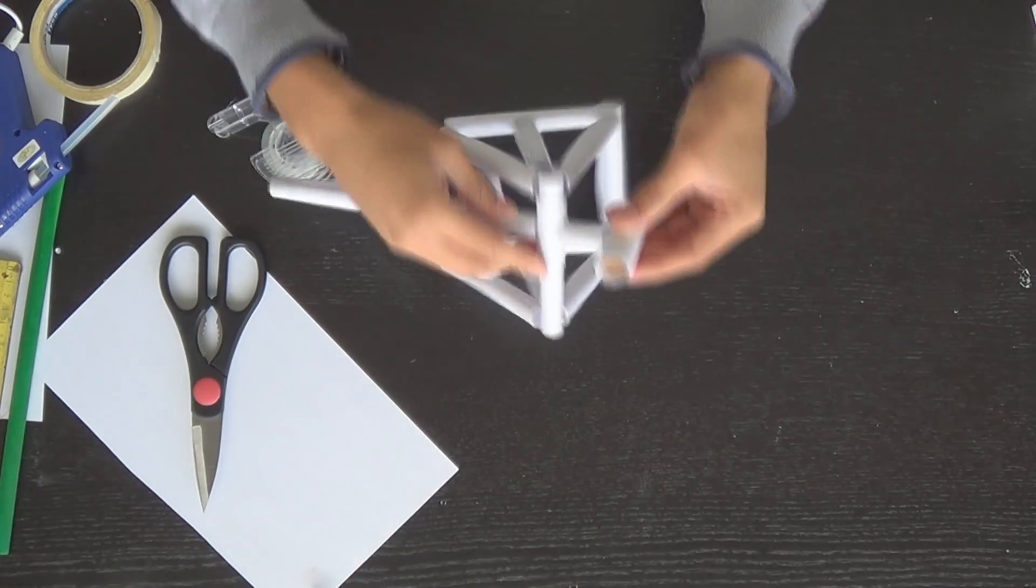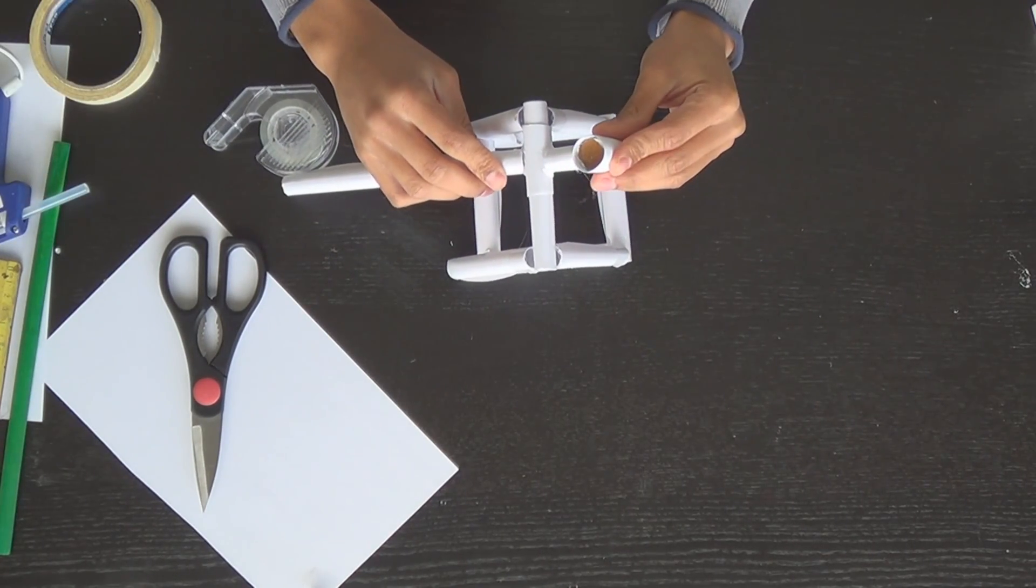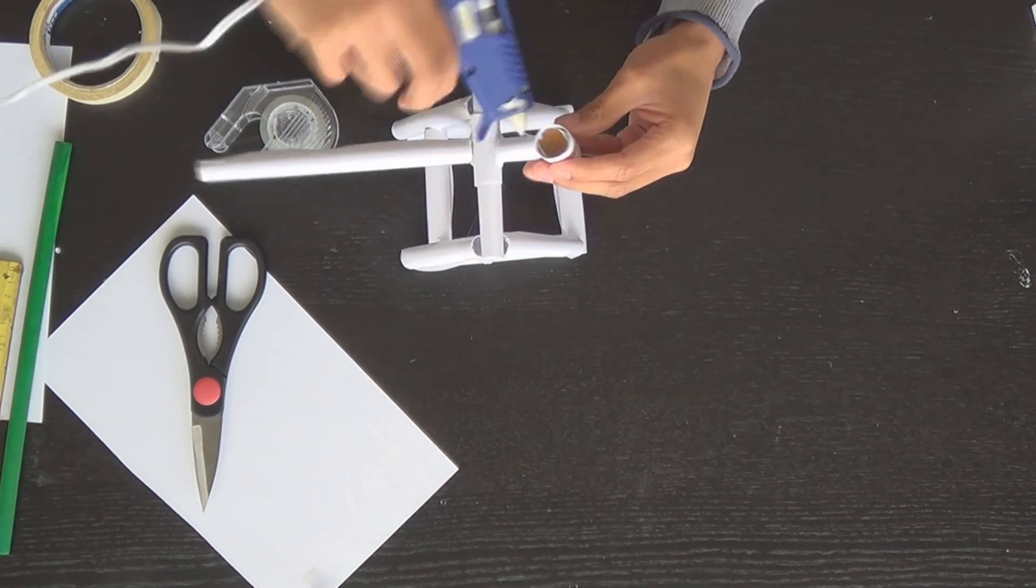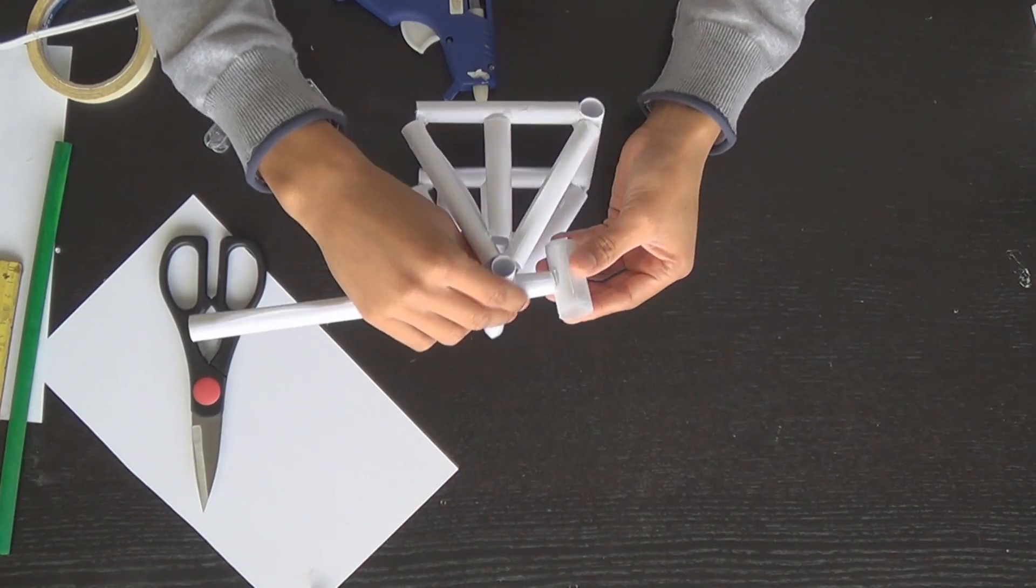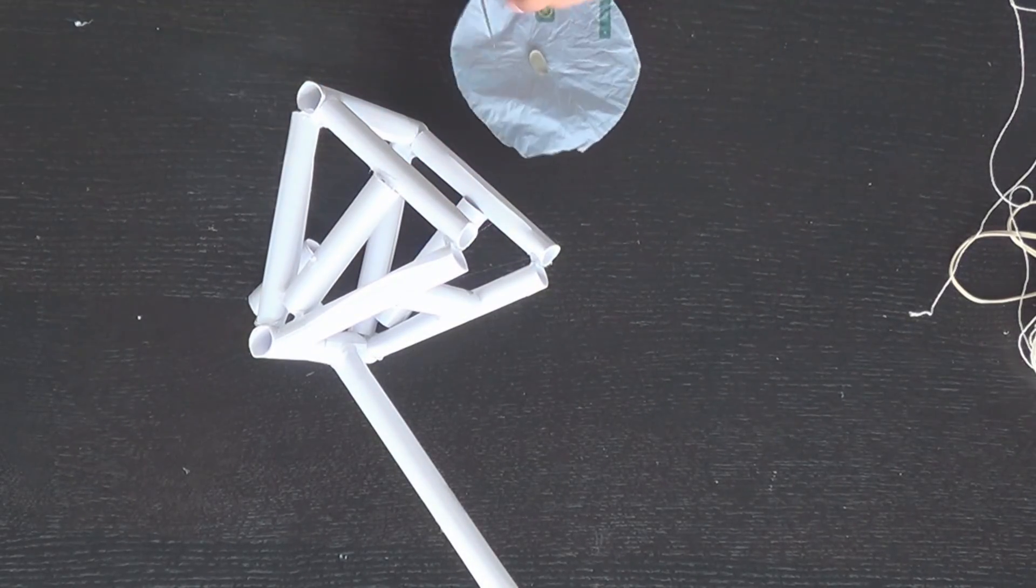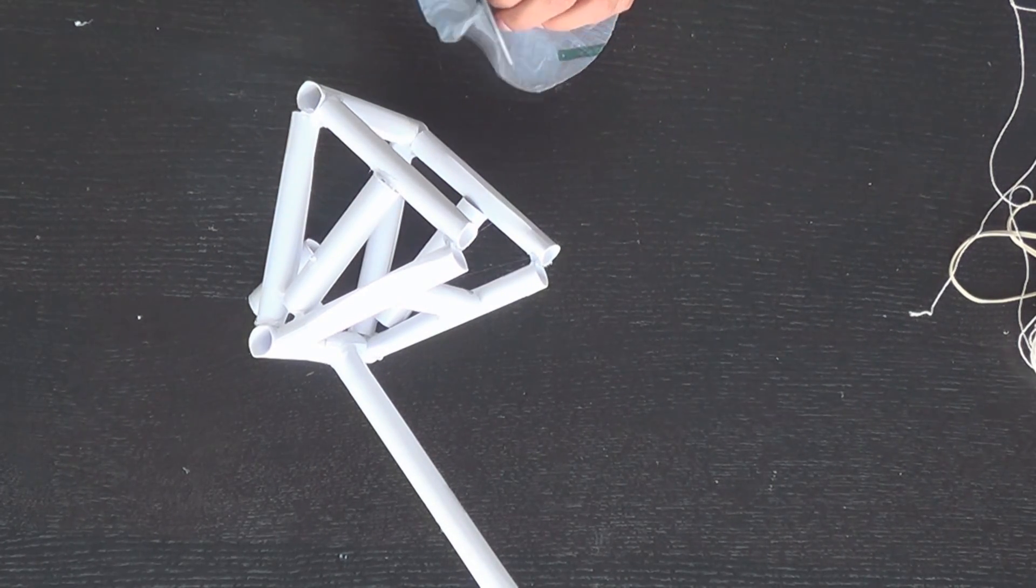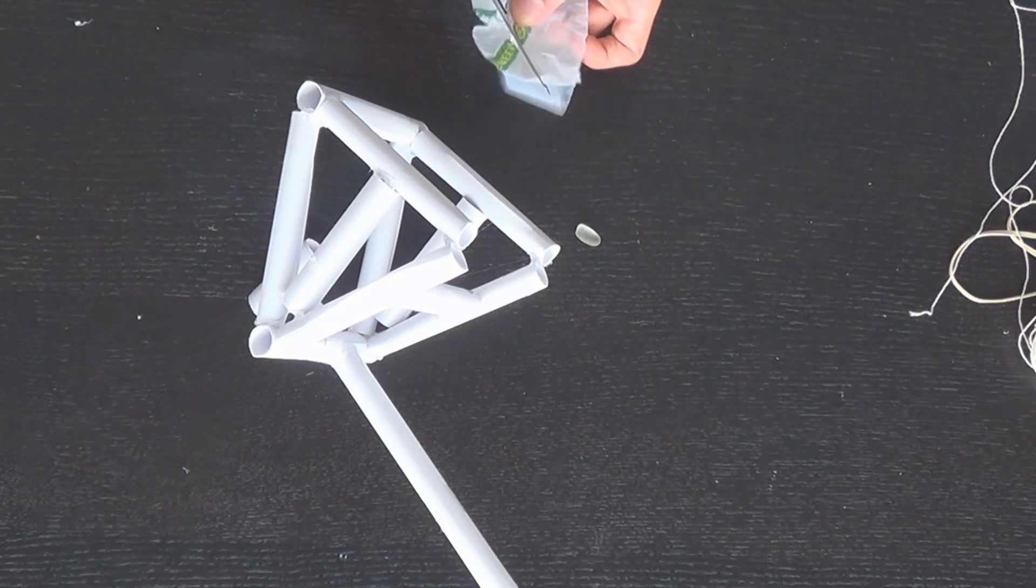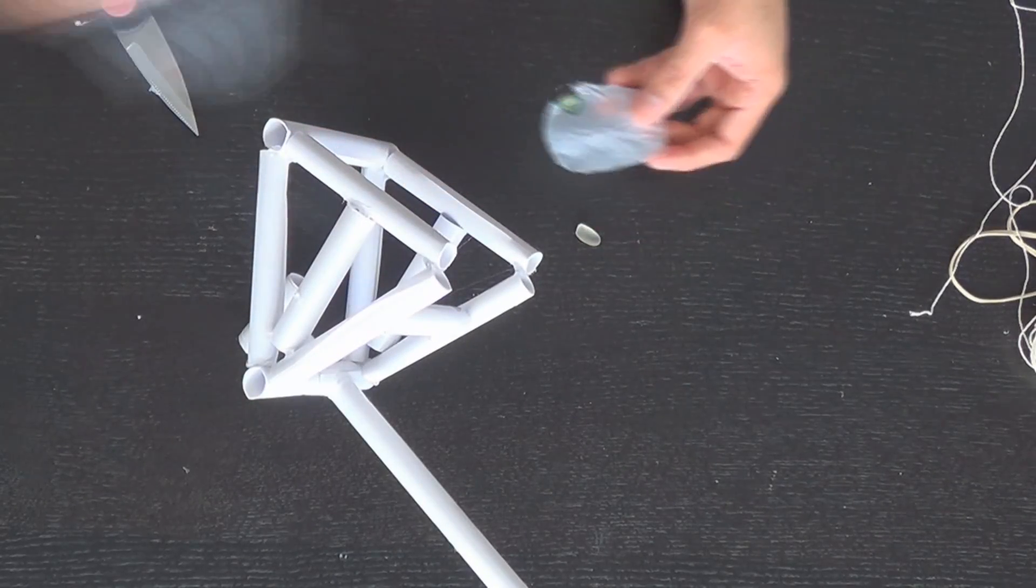Now we can mount our counterweight on the other end of the catapult. And now we're going to use a plastic bag, this is where our payload is going to be carried in. Just cut out a piece of plastic bag into an oval shape.